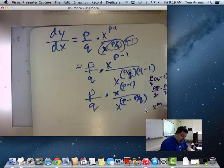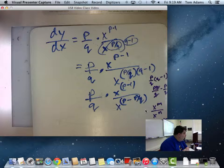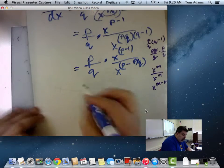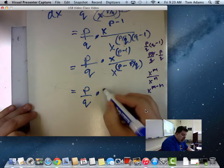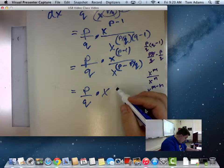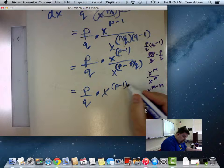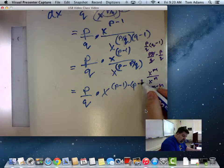Do you remember that? If I have X to the M and X to the N, isn't that the same as X to the M minus N? Oh, yeah. Does that make sense? So now I've got P over Q times X times P minus 1 minus P minus P over Q.